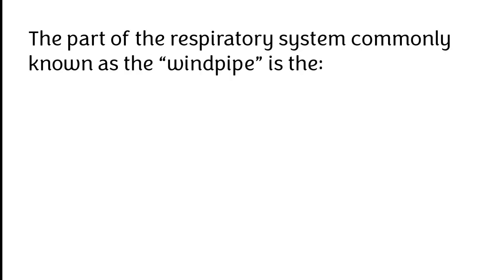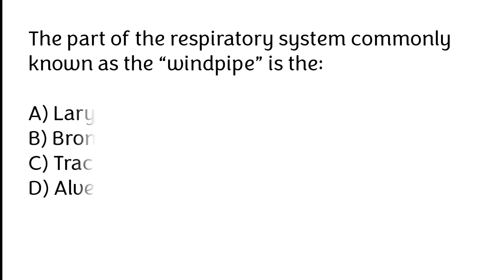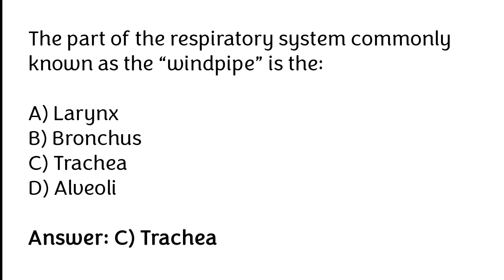The part of the respiratory system commonly known as the windpipe is the: larynx, bronchus, trachea, alveoli. The correct answer is option C. The part of the respiratory system commonly known as the windpipe is called the trachea.